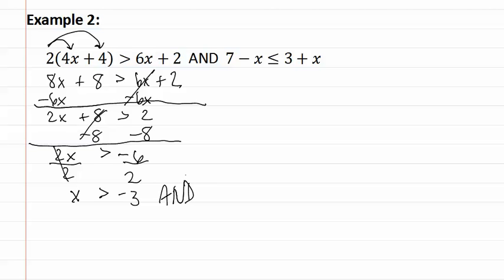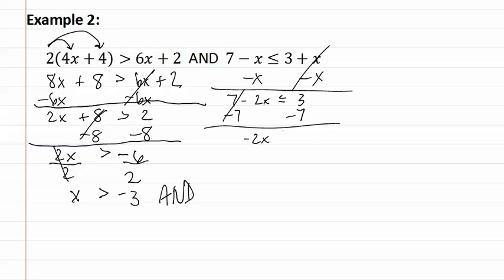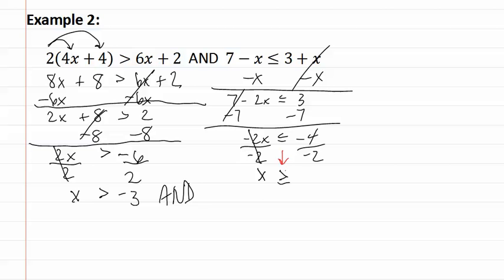And then we have AND and the second equation. We start by subtracting x from both sides, and we get 7 minus 2x is less than or equal to three. We subtract 7 from both sides and get negative 2x is less than or equal to negative four. We divide both sides by negative two, and since we divided by a negative, we need to make sure that we flip the sign. And we get x is greater than or equal to two.